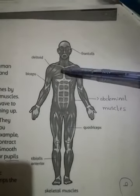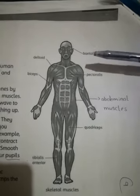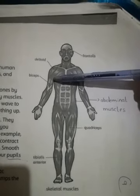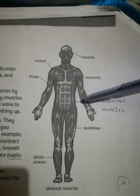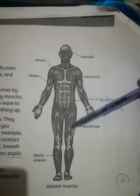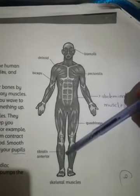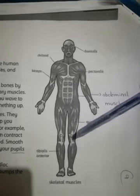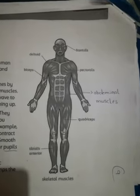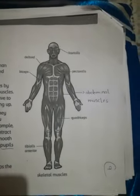Shoulder کے muscles کو کہتے ہیں deltoid۔ یہ والے muscles کو کہتے ہیں frontalis۔ یہ والے کو کہتے ہیں pectoralis۔ Arms کے muscles کو کہتے ہیں biceps۔ پیٹ کے muscles کو کہتے ہیں abdominal muscles۔ یہ والے کو کہتے ہیں quadriceps۔ Calf کے muscles کو کہتے ہیں tibialis anterior۔ یہ names آپ کو learn کرنے ہیں — اس کے بعد worksheet solve کرنی ہے۔ Hopefully you have understood. Allah Hafiz.